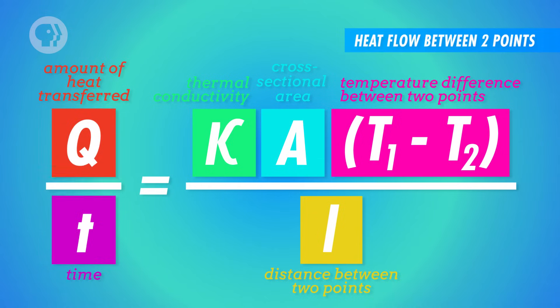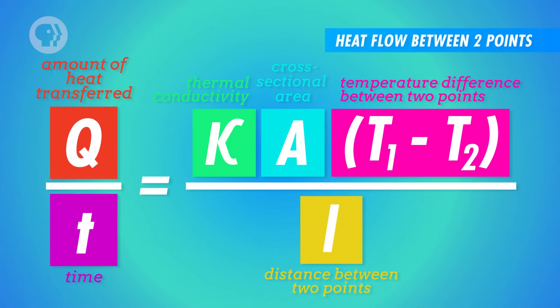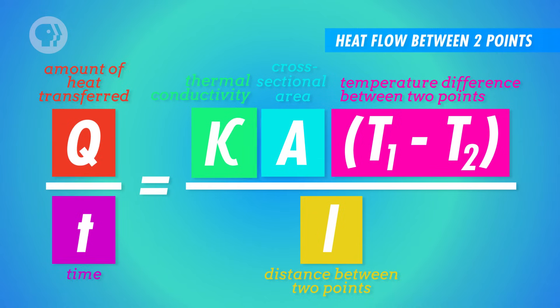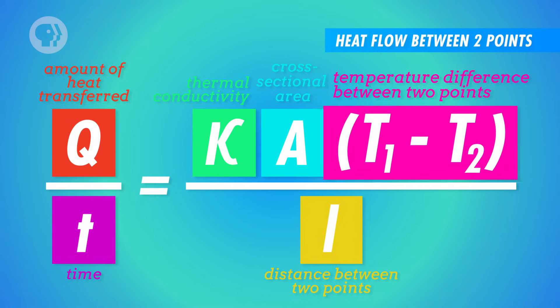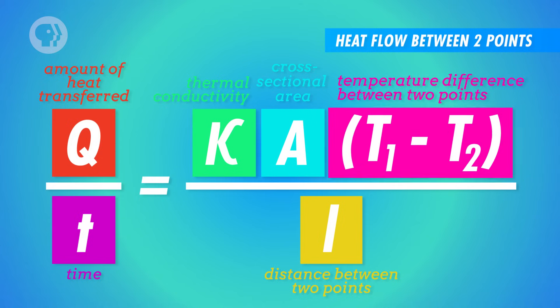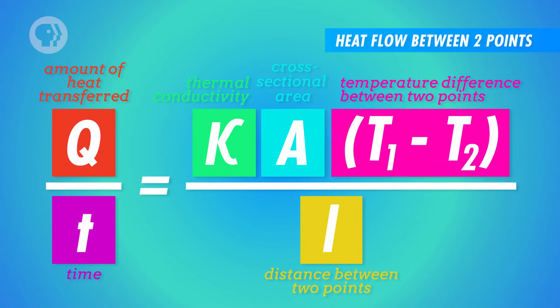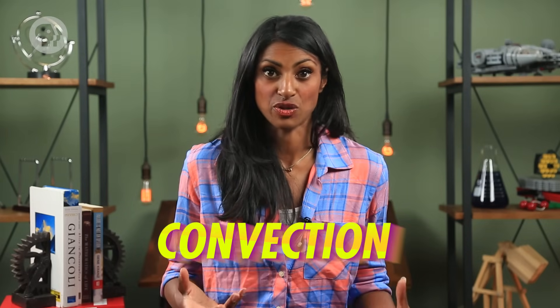It says that heat flow over time between two points – that's Q over T – is equal to K times the cross-sectional area, times the temperature difference between the two points, all divided by the distance between them. Another way that heat can spread is through convection.